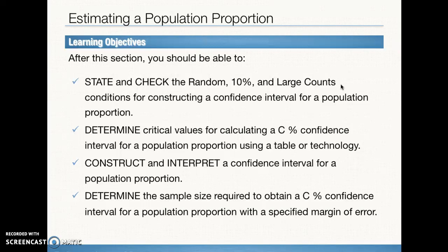We should also be able to determine critical values for calculating a C% confidence interval for a population proportion using a table or technology, construct and interpret a confidence interval for a population proportion, and determine the sample size required to obtain a C% confidence interval with a specified margin of error.